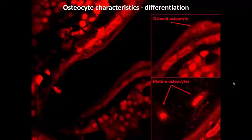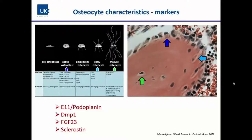How differentiation from osteoblasts to osteocytes works on a molecular level is still being discovered. There are initial data pointing to a role of the extracellular matrix and a few transcription factors. Certain markers are known to be specific for osteocytes. As osteoblasts differentiate further along the lineage, their collagen production is reduced and they start to express early osteocyte markers. One of the early ones is E11, also called podoplanin, which is responsible for dendrite formation.